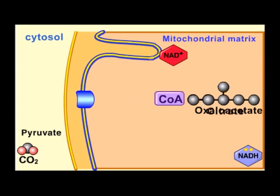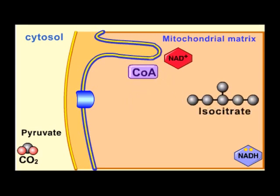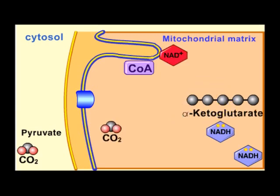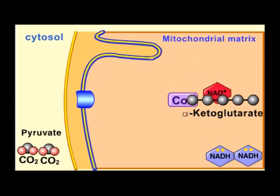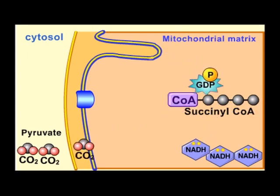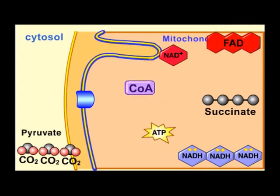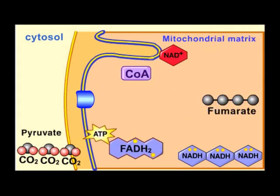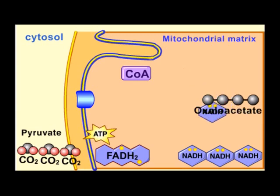The acetyl coenzyme A then combines with oxaloacetate in the mitochondria to form citrate, also known as citric acid — a 6-carbon molecule. Several reduction reactions occur afterwards, generating 3 carbon dioxide, 4 NADH, 1 FADH, and 1 ATP for every molecule of pyruvate. This is multiplied by 2, since 2 pyruvates are created during glycolysis.